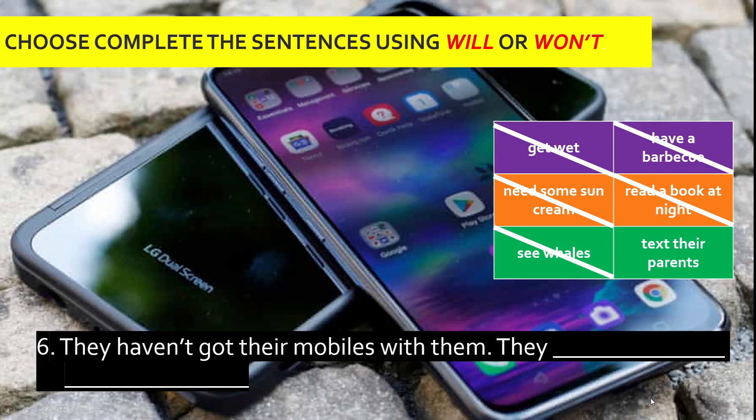Number six: 'They haven't got their mobiles with them. They...' The last answer here is 'text their parents'. Since they don't have their mobiles, the answer should be 'won't' — they won't text their parents.